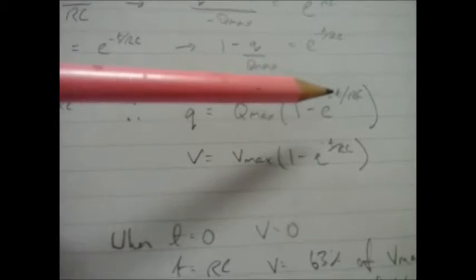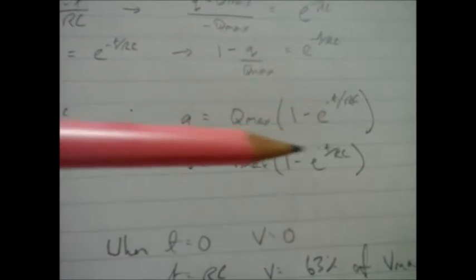So what does this equation actually mean? Let's have a quick look at it. Well, if I make T zero, so at time equals zero, that'll be zero. I'll get E to the power zero gives me 1. 1 minus 1 is nothing. Q max times nothing is nothing. So at time zero, the charge across the capacitor will be zero, exactly what you'd expect.